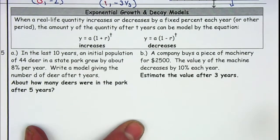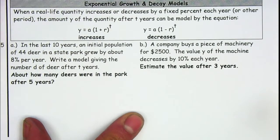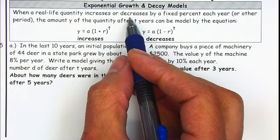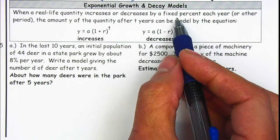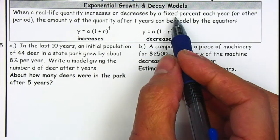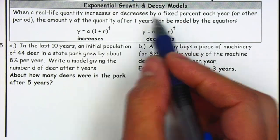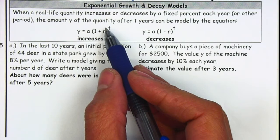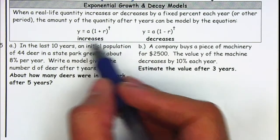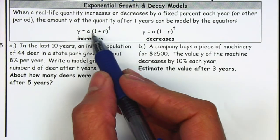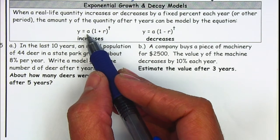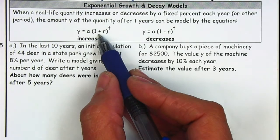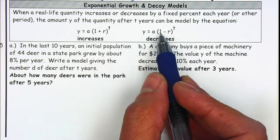Example number five — we have exponential growth and decay models. When a quantity in real life increases or decreases by a fixed percentage each year, month, hour, or quarter, the amount y after t years can be modeled by the following equation. R corresponds to the rate, a will be the initial amount, and t is the time. If it's increasing, we're going to have a plus; if it's decreasing, it will be a minus.